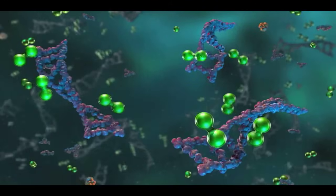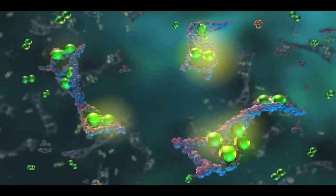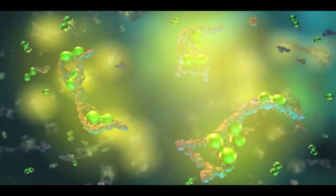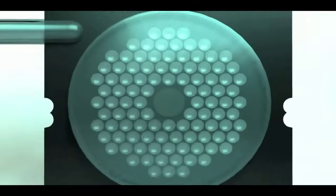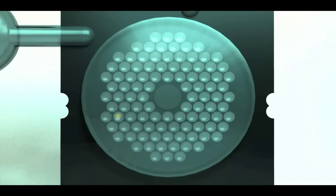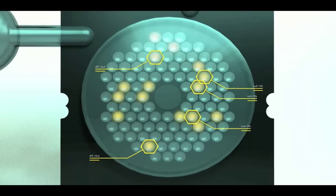A fluorescent double-stranded DNA binding dye is used to monitor each reaction. The second stage primers in each well are designed to detect one specific target. Organisms are identified based on which wells in the array are positive.